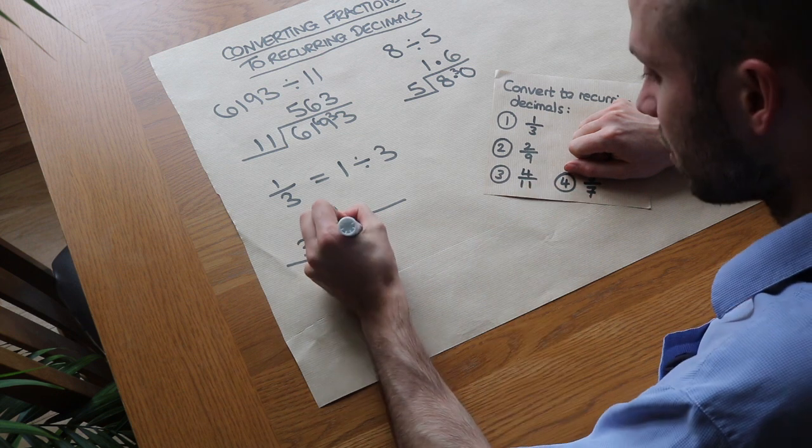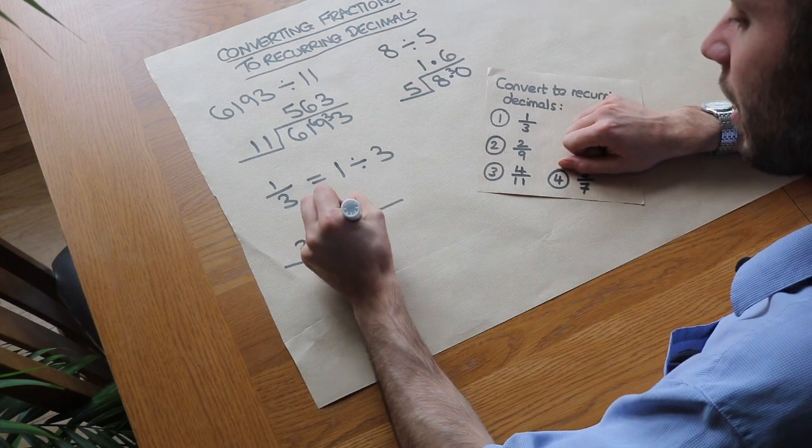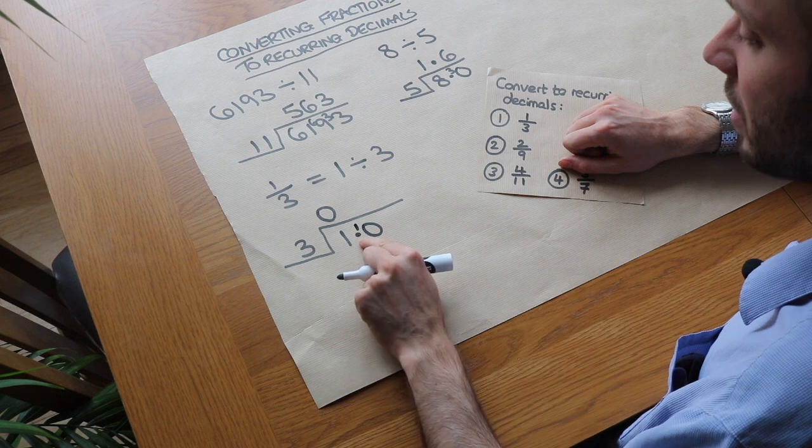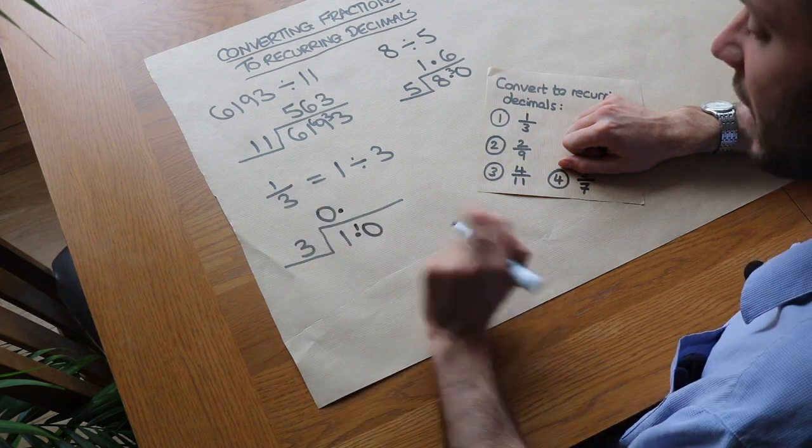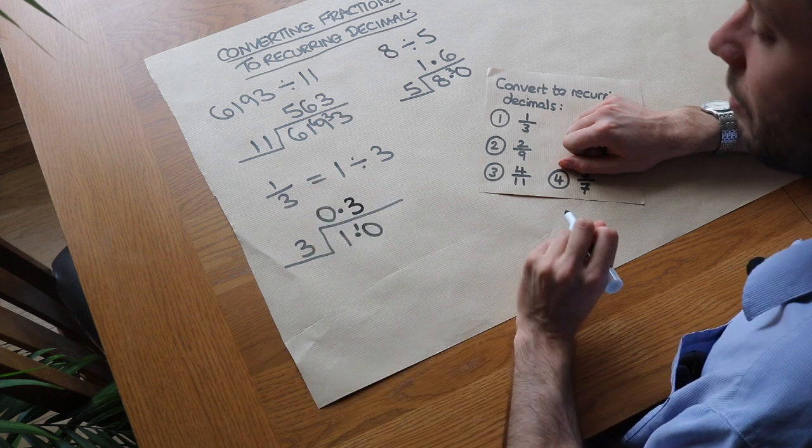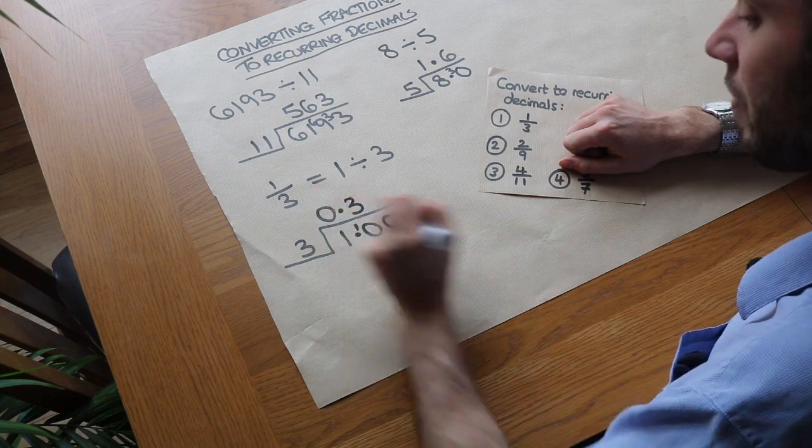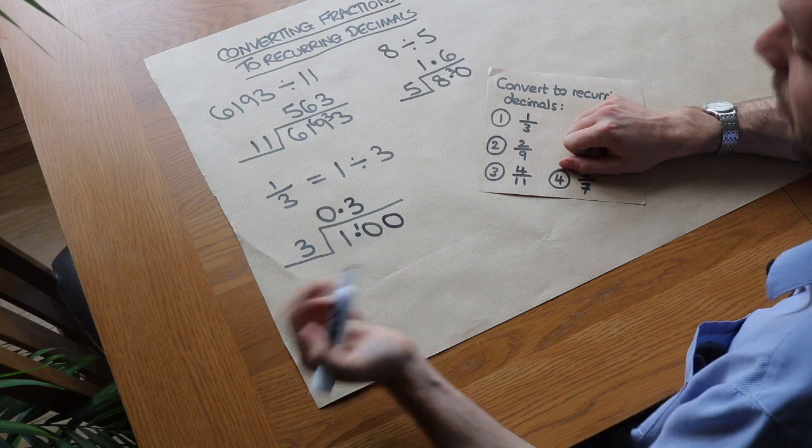But we still have the 1 sweet left in our hand. So with that remainder of 1, we need to put 0.0. And that allows me to put that remainder of 1 here. And if I put a decimal point here, I have to put a decimal point here. How many times does 3 go into 10? Well, 3 whole times remainder 1. And again, I can just put another 0. 1.00 is the same as 1, isn't it?